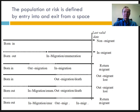Migration status can be allocated to all individuals depending on when they in- or out-migrated from the study area. Of course, this diagram only represents a simplified version of migration histories. There can be much more complicated migration histories with a succession of in and out migrations and gaps of different durations.